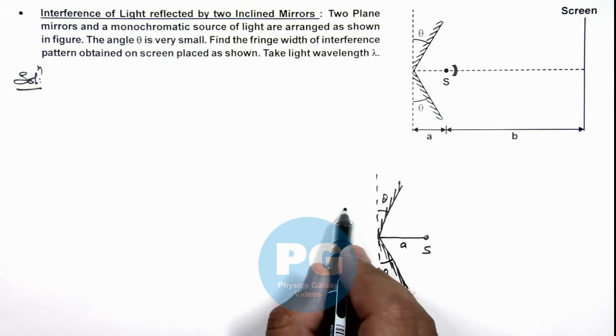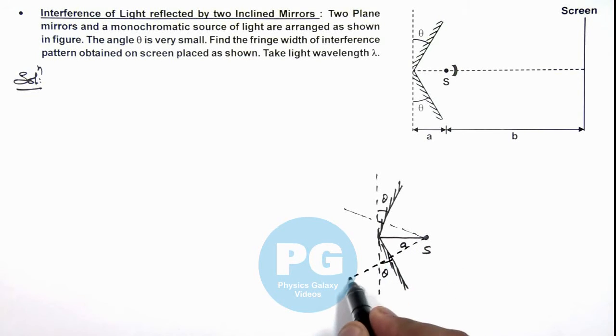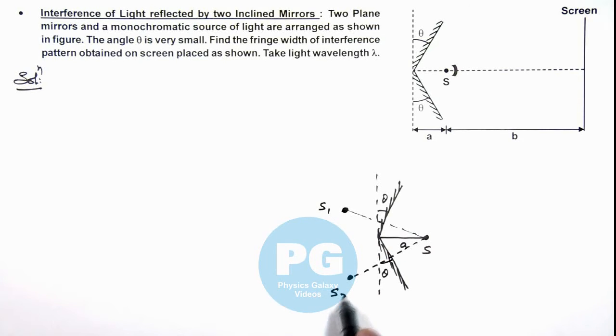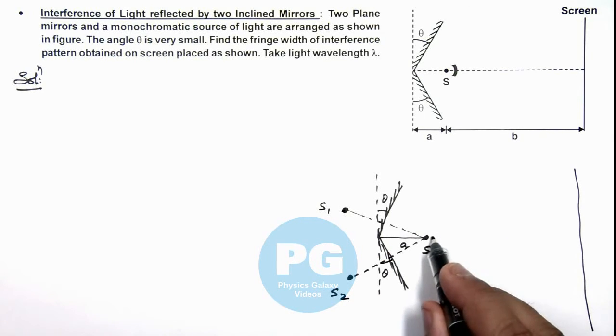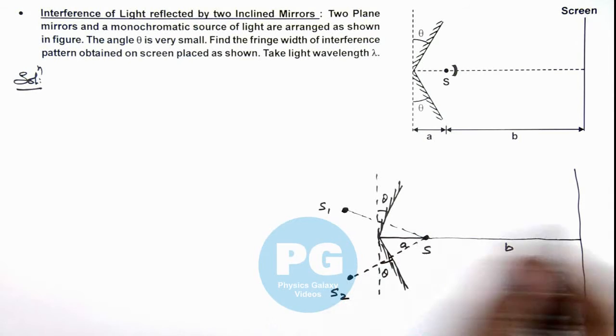In both of these mirrors at the same separation where source is located, two images are obtained, S1 and S2. And if we talk about screen, which is located at a distance b from the source, light beams will be coming from these two images S1 and S2.